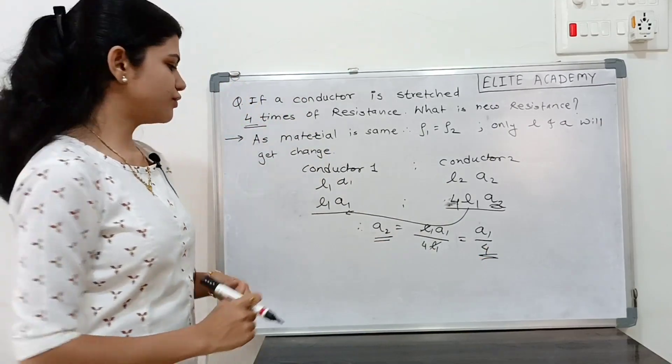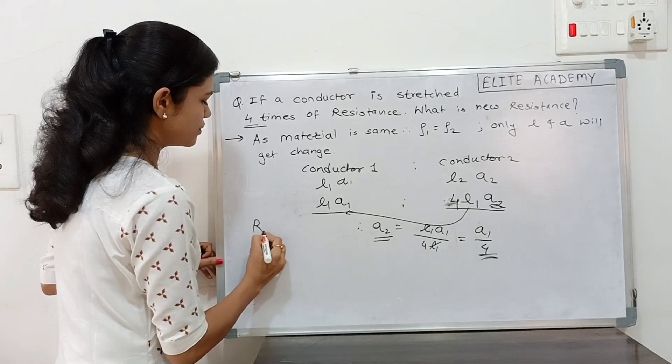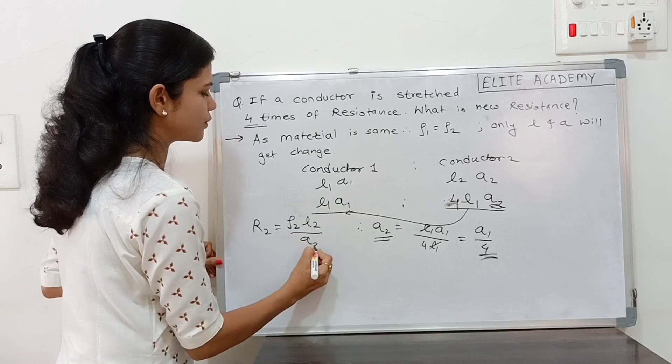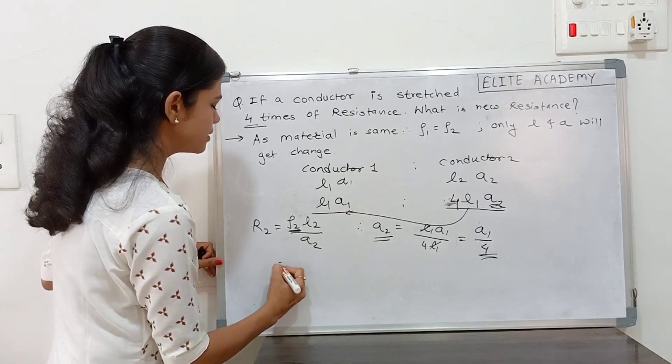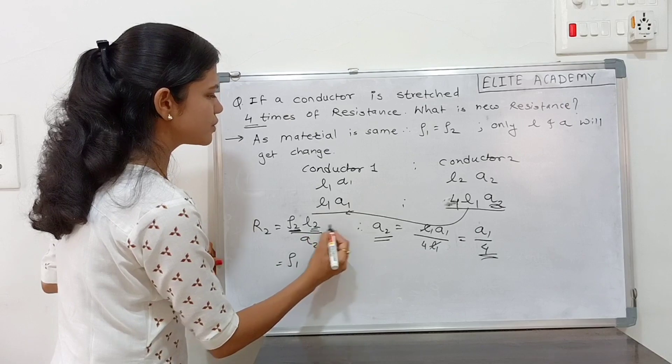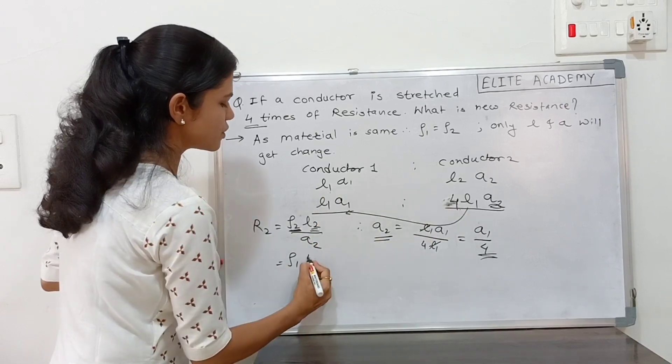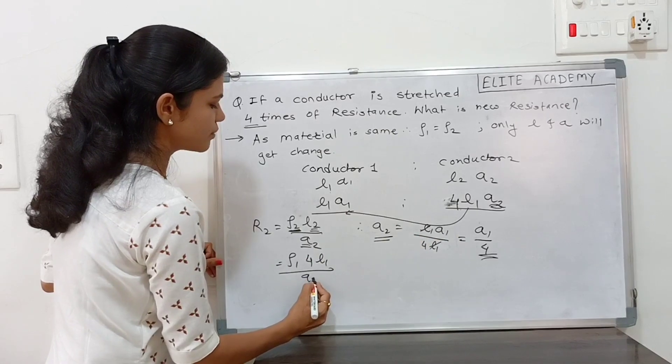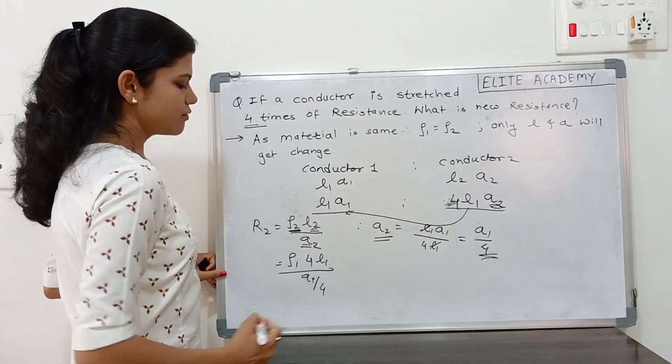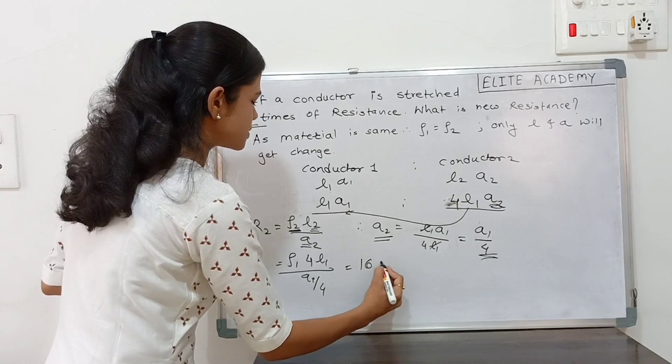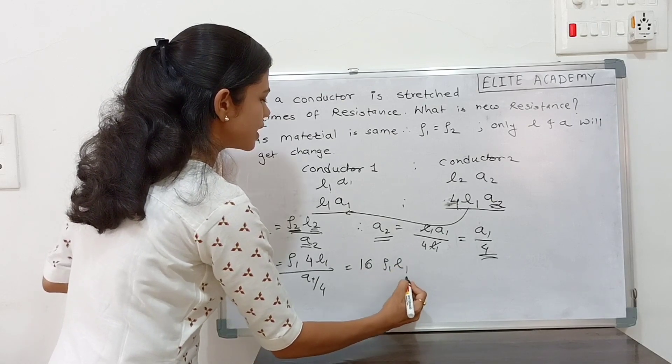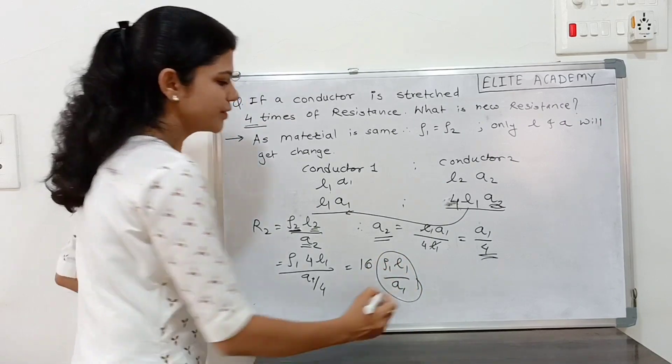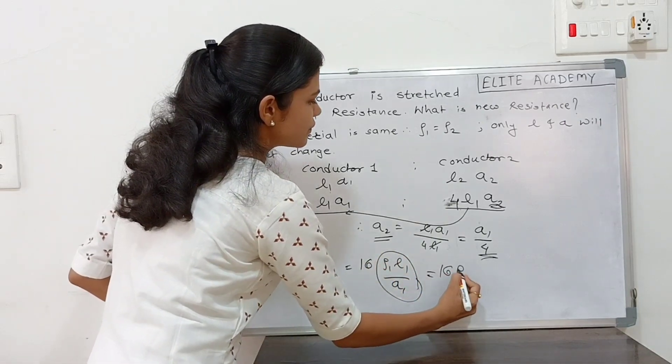Now I apply the formula for resistance. R2 is equal to rho 2 L2 upon A2. But what is the value? L2 is equal to four times of L1 upon A2 is equal to A1 by four. R2 which is nothing but the 16 rho 1 L1 upon A1. This is nothing but the resistance 1.